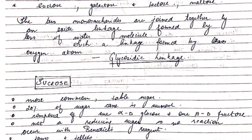Let's start with sucrose, which is the most common table sugar. 20% of sugar cane is sucrose. It is composed of one alpha-D-glucose and one beta-D-fructose. You are supposed to know the structures very well for monosaccharides. They are linked at alpha-1 and beta-2. Now let's look at the diagram to see how they are linked.